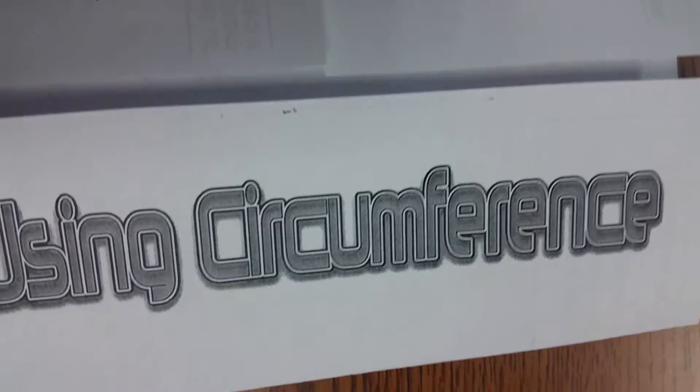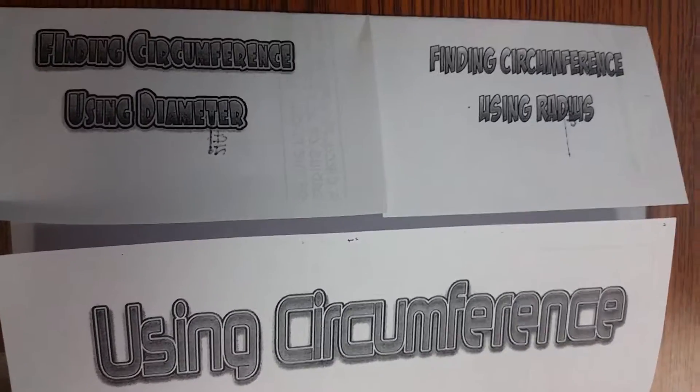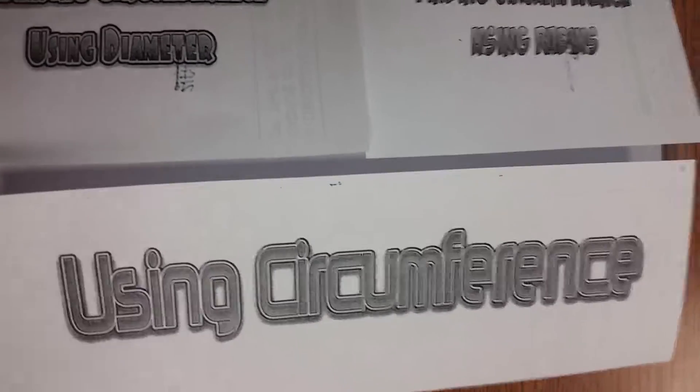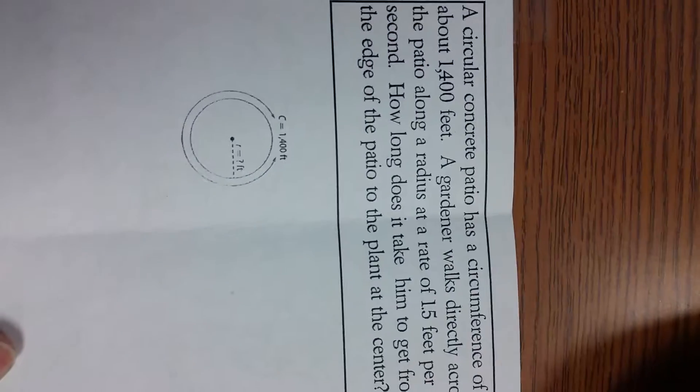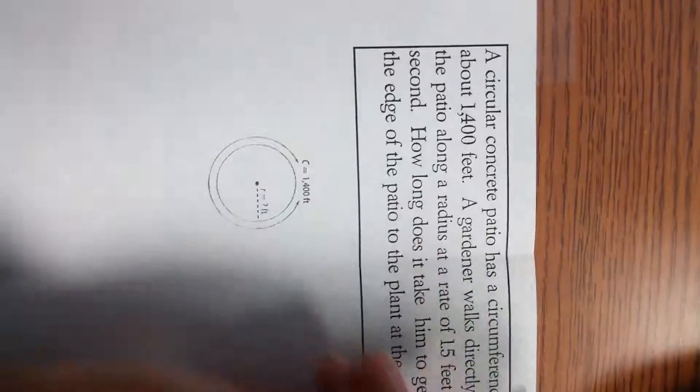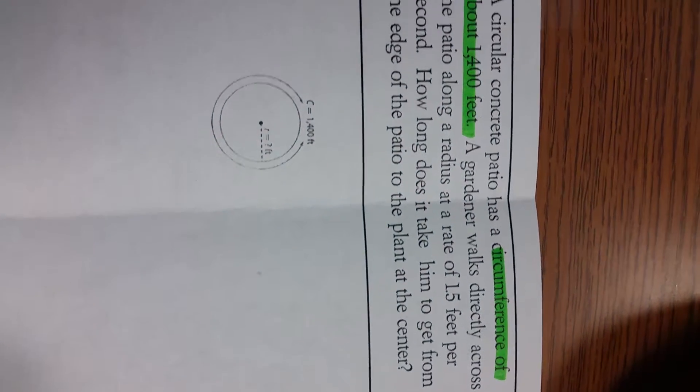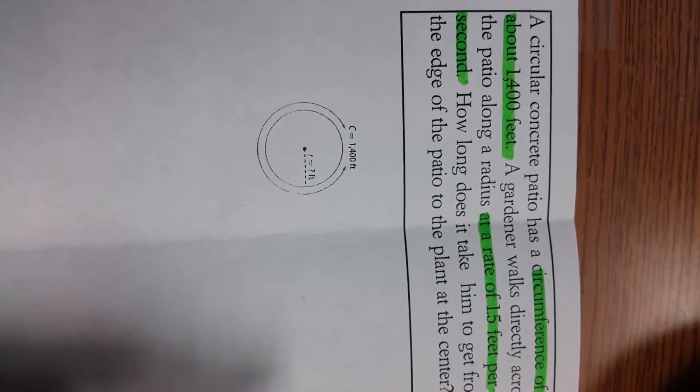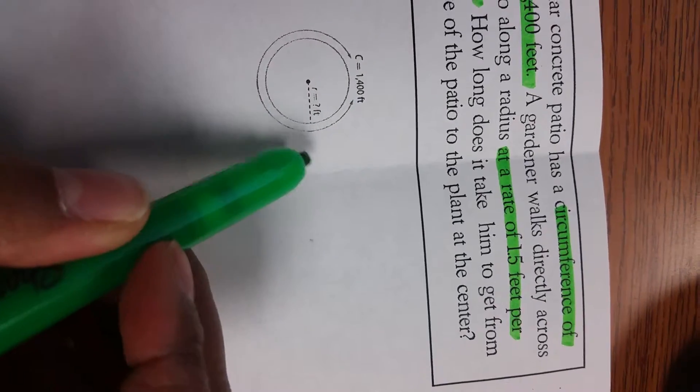Alright, now we're going to move on to using circumference. We just did some basic problems on finding the circumference using the radius and the diameter. We just simply had to plug it in and find that answer. Now we're actually going to use circumference in a scenario. So here we have a circular concrete patio that has a circumference of about 1,400 feet. So I'm going to highlight that. The circumference, it actually gives us a circumference this time, it's 1,400 feet. Our gardener walks directly across the patio along a radius at a rate of 1.5 feet per second. How long does it take him to get from the edge of the patio to the plant at the center?